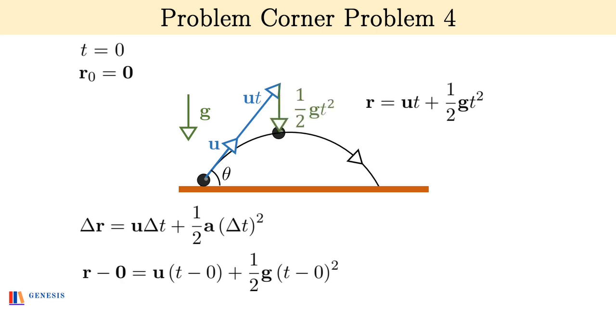This is u vector into t at an angle theta from the horizontal. This is half g vector t square which will point vertically down, and closing this vector triangle, this is r vector.